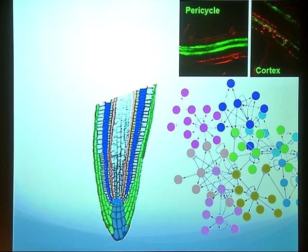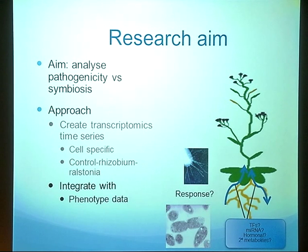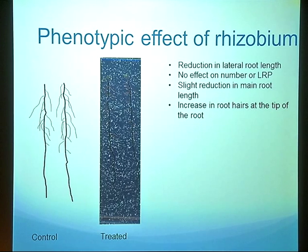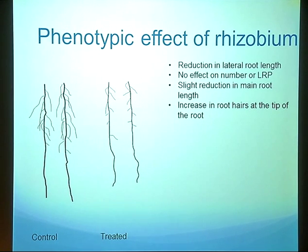The cell types we are looking at are pericycle cells, because that is where lateral root development starts, and cortex cells, because that is where nodulation starts. Once we have the transcriptomic time series, we will integrate it with phenotypic data, which we already have. We inoculated Arabidopsis with different concentrations of nod factor, with solutions of dead rhizobium, and with living rhizobium, but we only really see an effect with living rhizobium. We see that lateral roots are severely reduced in length, although there is no difference in lateral root primordia — the same number of lateral roots exist, but most are much shorter or not emerging at all. There is a slight reduction in main root length and a quite significant increase in root hairs, both in length and number at the tip of the root.